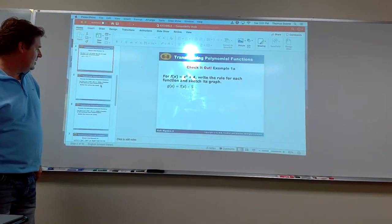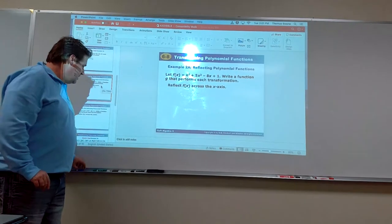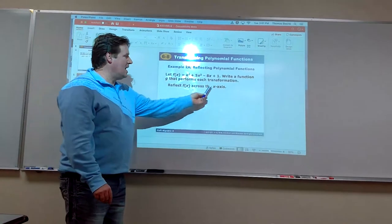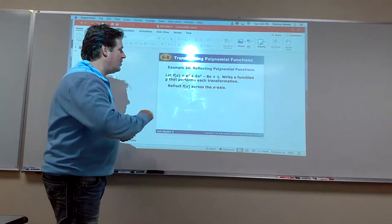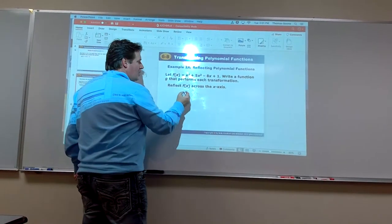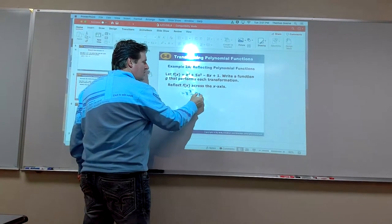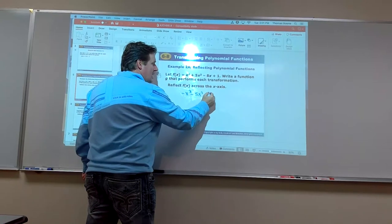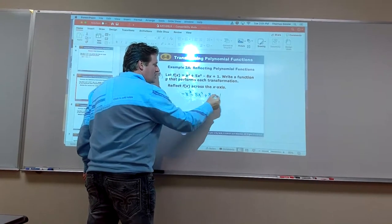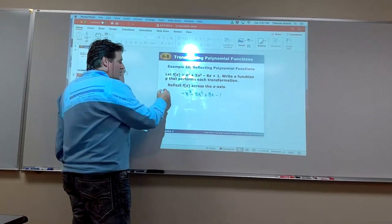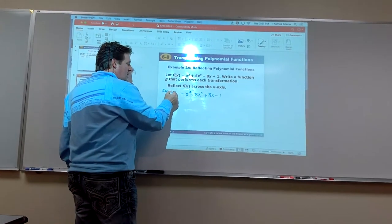Let's get to reflections. When you reflect across the x-axis, you change the sign of every term. So the reflection would be negative x³ - 5x² + 8x - 1. See how you change all of them - that's the reflection across the x-axis.